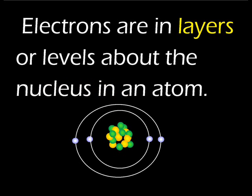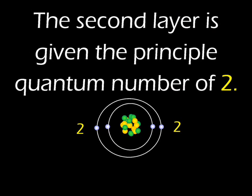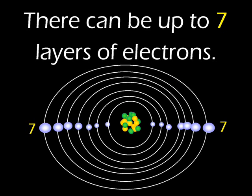Each principal quantum number corresponds to the position the electrons occupy as they travel around the nucleus of an atom. Not all electrons in an atom travel in the same path at the same distance from the nucleus — they are arranged in concentric orbits or energy levels, just like the planets in our solar system revolve around the Sun at various distances. The first energy level from the nucleus is given the principal quantum number of one, the second is given two, the third is given three, and so on up to the seventh level, which is given the principal quantum number of seven.